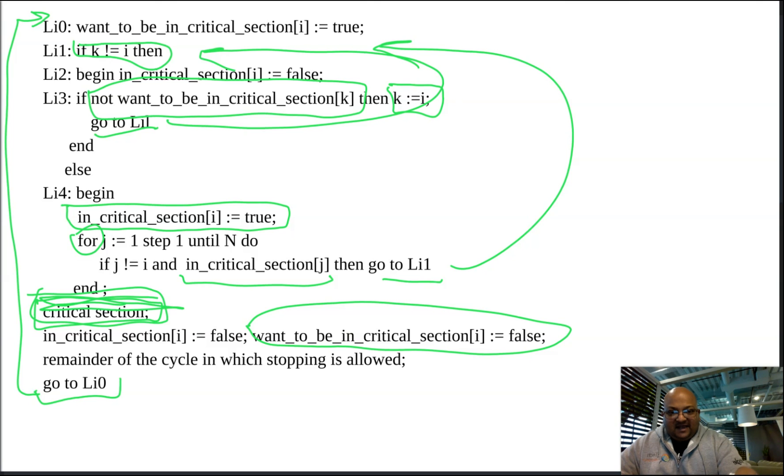And once k is assigned the value i, b of k becomes true. So this becomes true for the kth element when this k is assigned the value i. And this means no other processes can select a new value for k. So what happens then is k will point to one of the looping processes, and then will not change its value until the critical section is done.